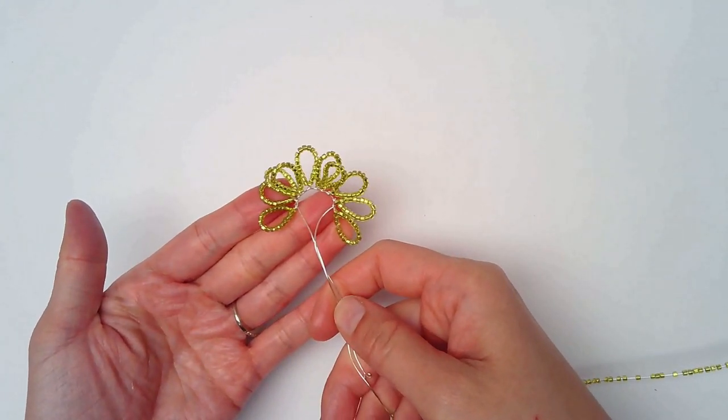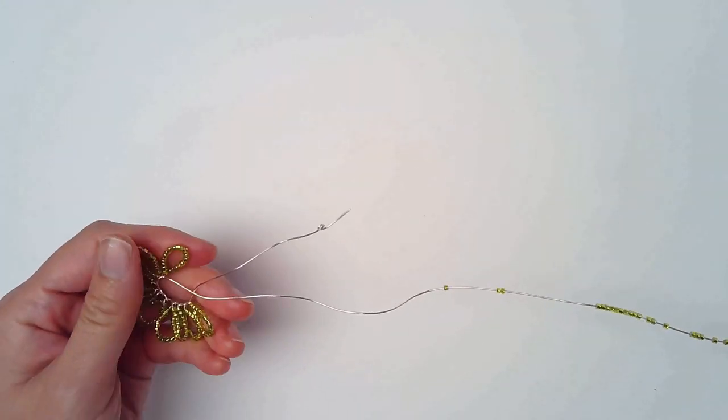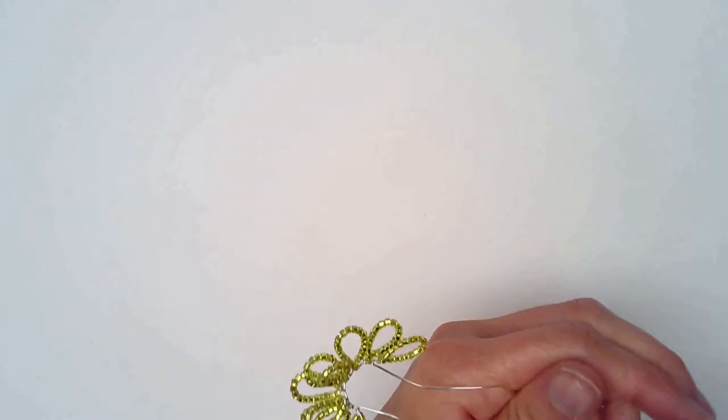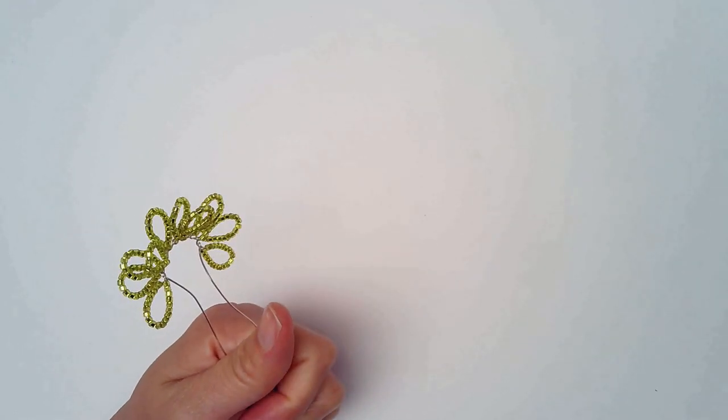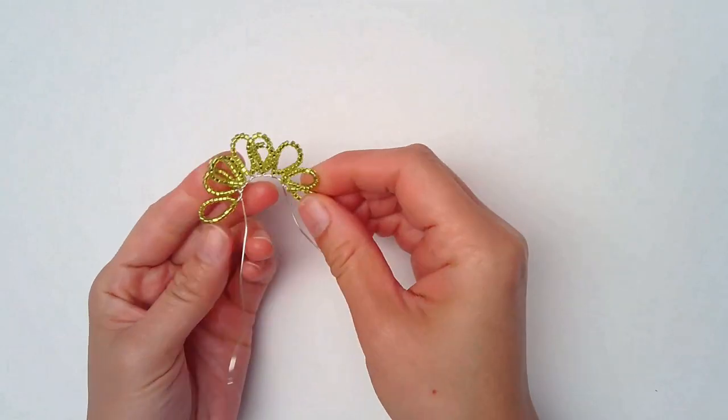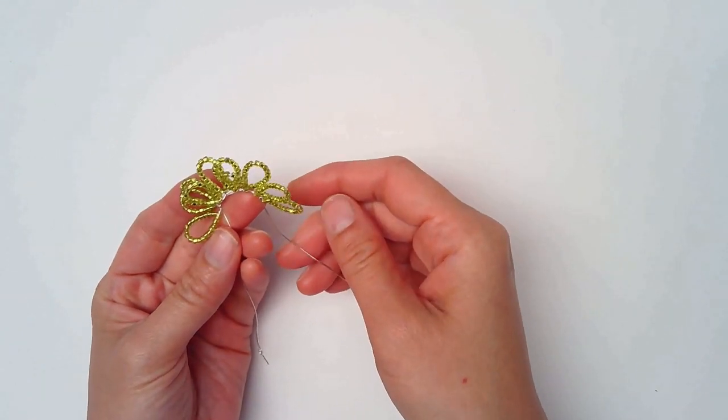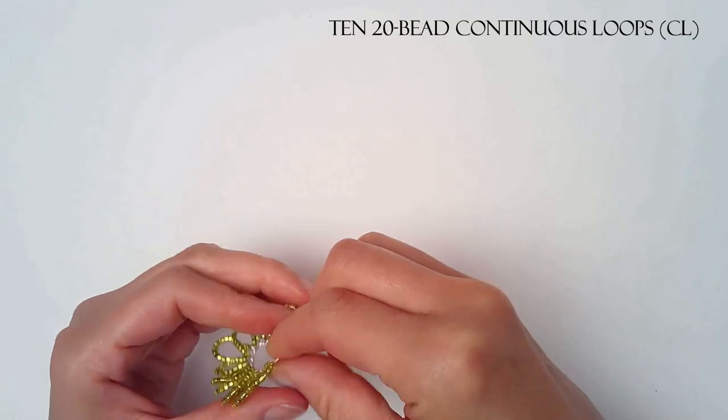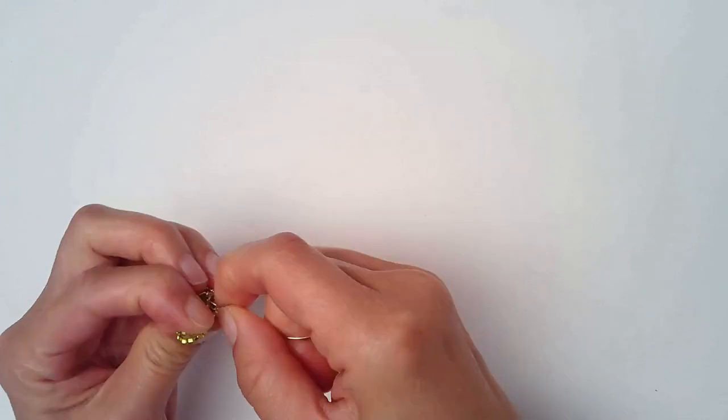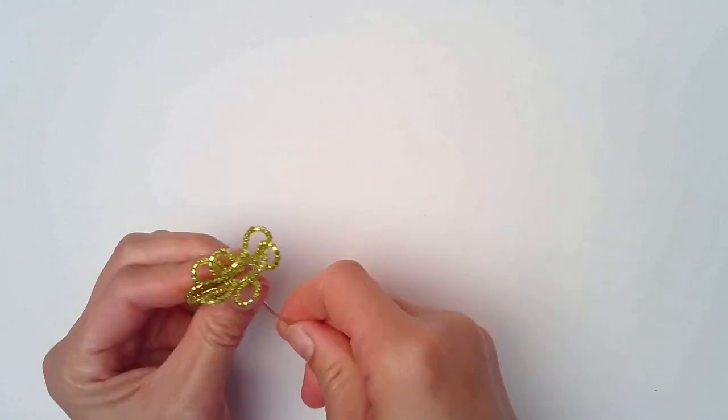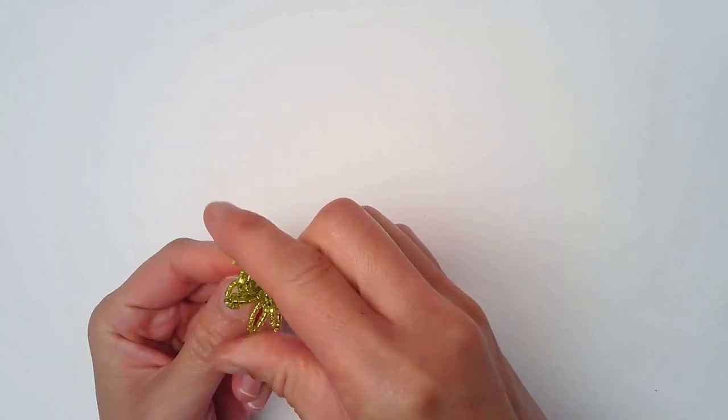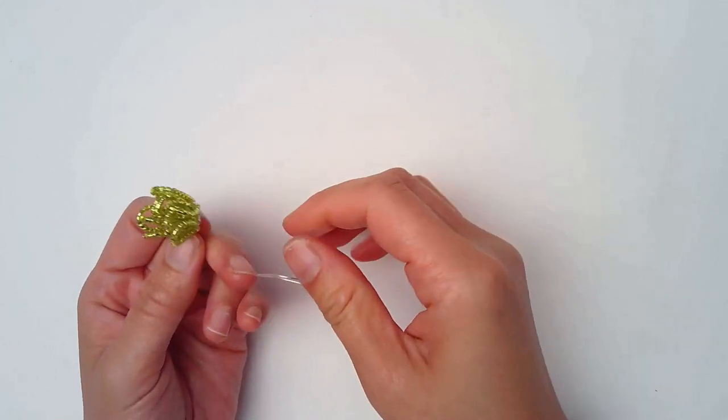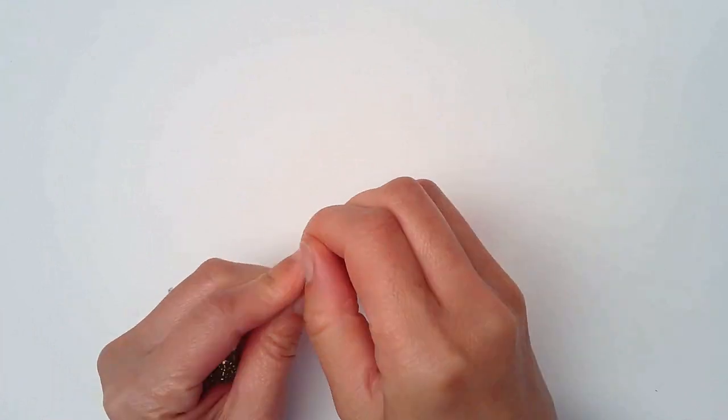Now that I have 10 of these loops done, I'm going to cut off another tail off of the spool. So now I have 10, 20 bead continuous loops. Just cross the two ending tail wires together. I'm just going to smush, yes that's a technical term, smush all this together.